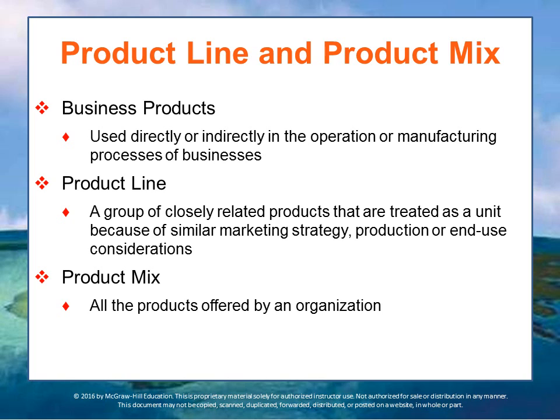Product relationships within an organization are of key importance. A product line is a group of closely related products treated as a unit because similar marketing strategy, production, or end-use considerations are important. Product mix is all of the products offered by an organization — all these various business and consumer products together.